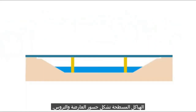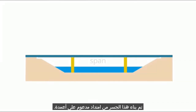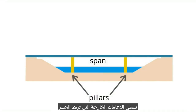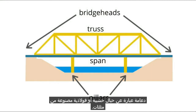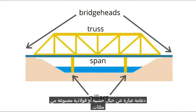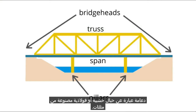Flat structures form beam and truss bridges. Such a bridge is built of a span supported on pillars. The outer supports that connect the bridge with the road are called bridgeheads. To increase the strength of the bridge, engineers add a truss — that is, a wooden or steel sling made of triangles.